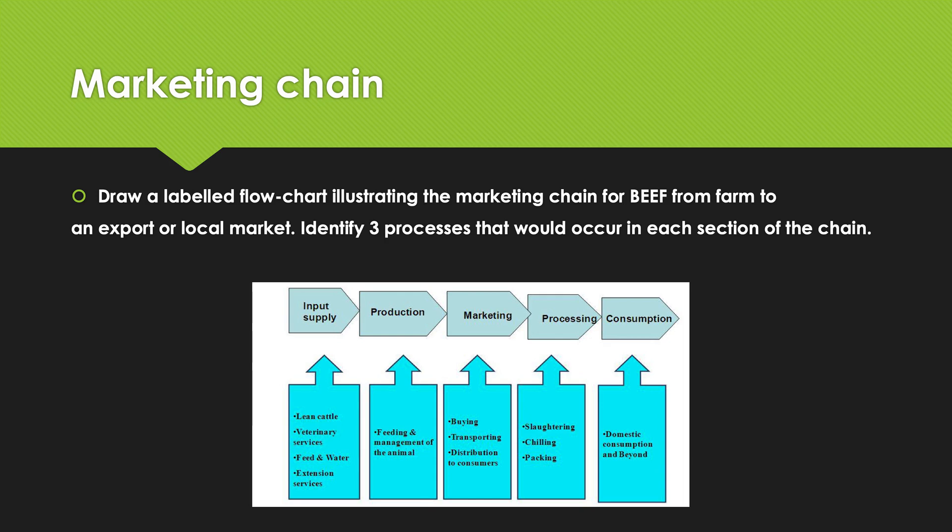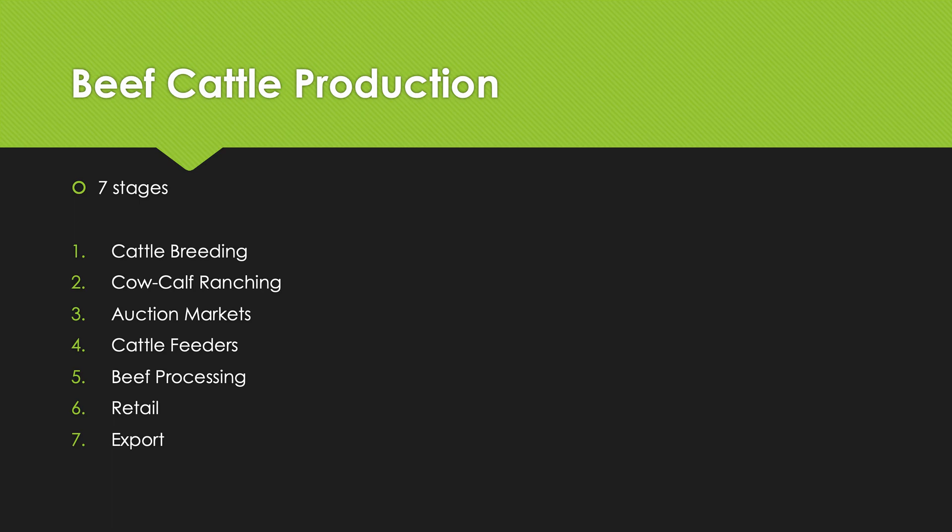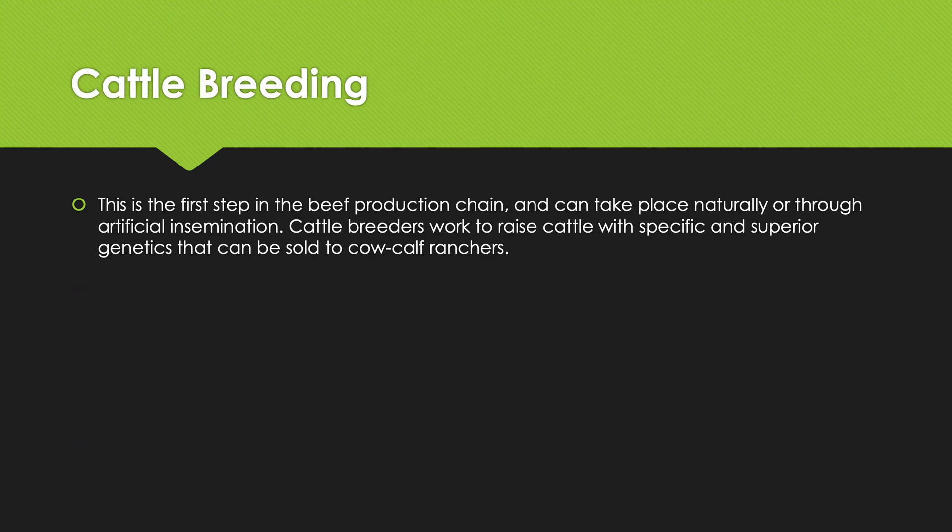We went into more detail and had these seven main stages: number one, cattle breeding; number two, cow-calf ranching — ranching is quite American so we might change that to farming; number three, auction markets; number four, cattle feeders; number five, beef processing; number six, retail; and number seven, export. We'll go through each one of these stages in the production cycle.